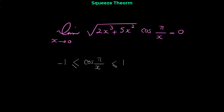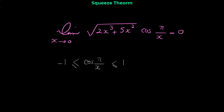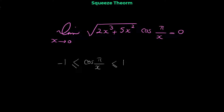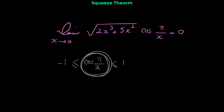In general for sine and cosine, it doesn't matter what is inside — everything can be there. Sine and cosine are always between negative 1 and 1; they oscillate between negative 1 and 1. So cos(π/x) is between negative 1 and 1, and the lower bound and upper bound of this function are negative 1 and 1. Keep this in mind for sine and cosine. After this, we try to make the expression in the middle look like the limit we want to evaluate.